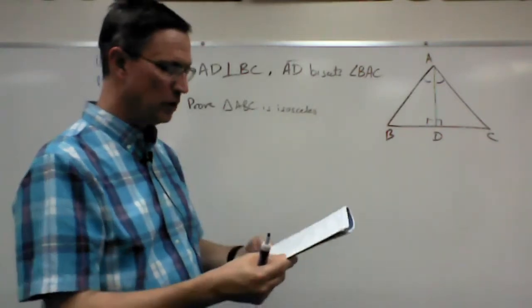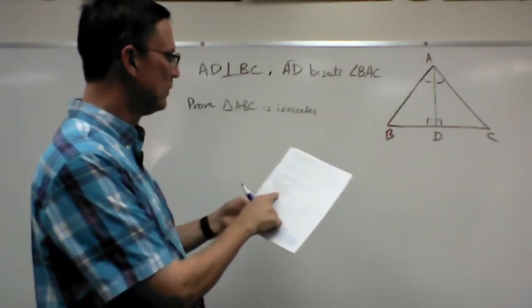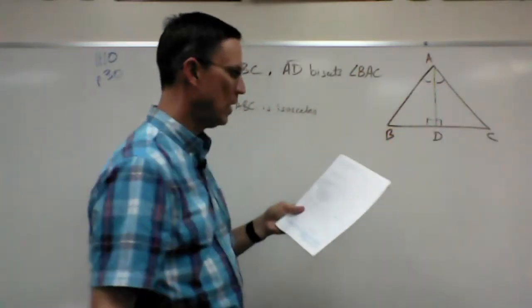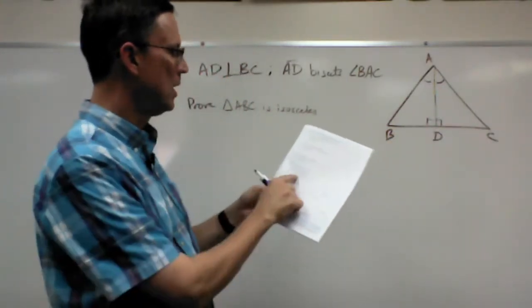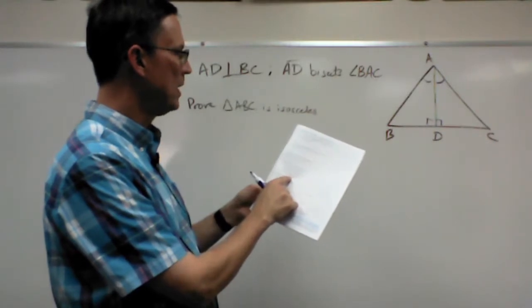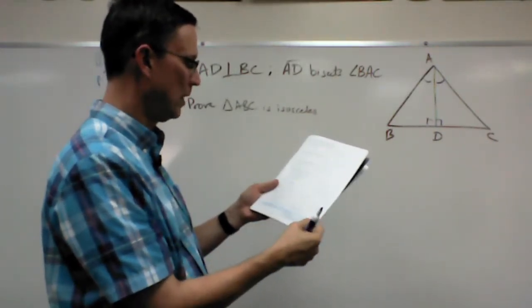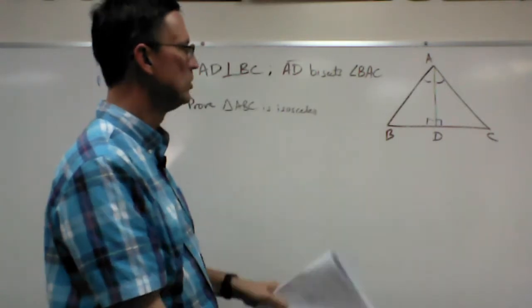So our goal, and it even tells us here, prove first of all that triangle ADB is congruent to triangle ADC. Okay, and then we can prove that AB is congruent to AC. And if that's true, then we know that by definition.